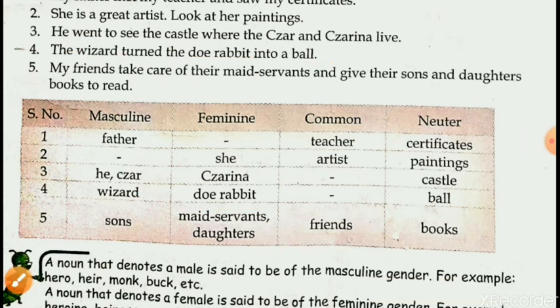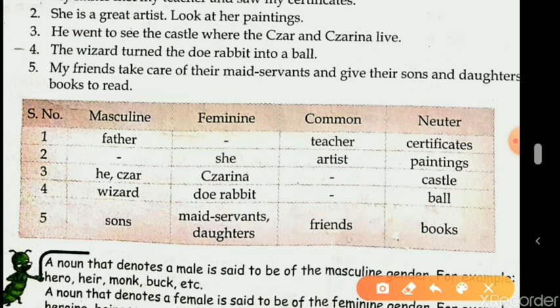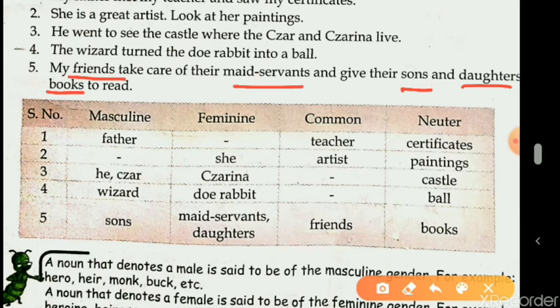Sentence number five: 'My friends take care of their maidservants and give their sons and daughters books to read.' There are five nouns. Friends can be boys and girls both — common gender. Maidservant refers to female — feminine gender. Sons refers to male — masculine gender. Daughters — feminine gender. Books are non-living objects — neuter gender.